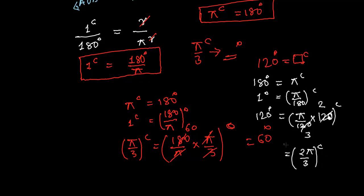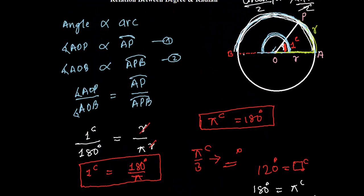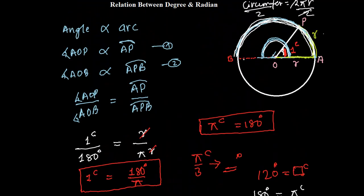2π over 3 radians. So, 120 degrees equals to 2π by 3 radians. This is how we need to convert. This is a very good relationship. Use this relationship to convert from radian to degree or degree to radian.